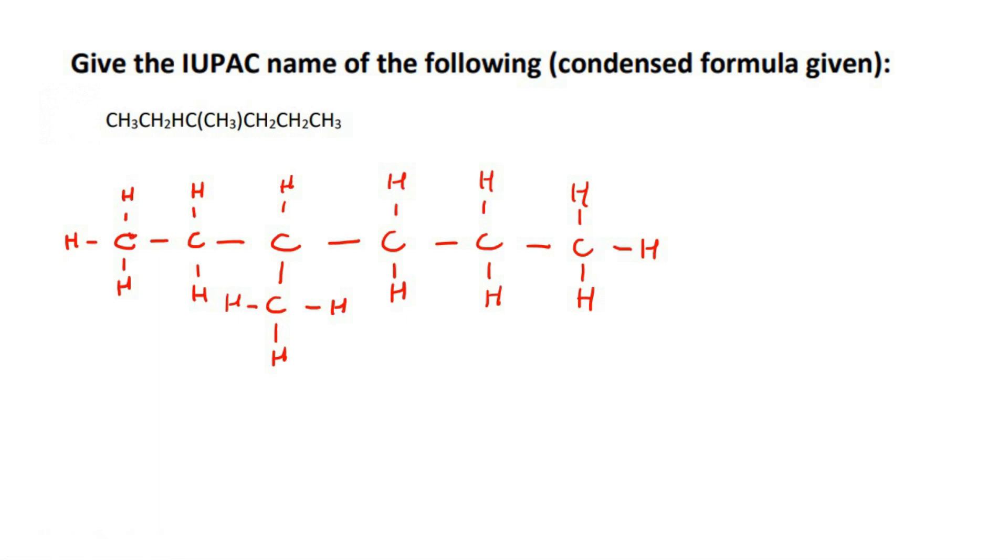The longest chain is one, two, three, four, five, six carbons, so that's hex. We're going to name it from the left-hand side, which is this side over here, because we want the branch number to be as low as possible. So this is carbon number one, this is carbon number two, and this is carbon number three.